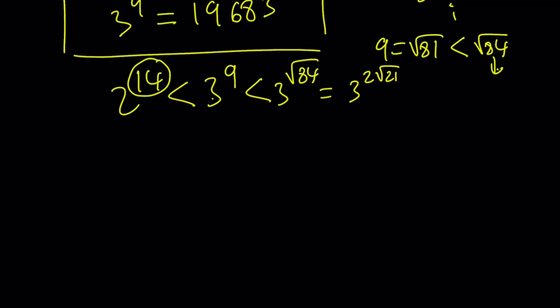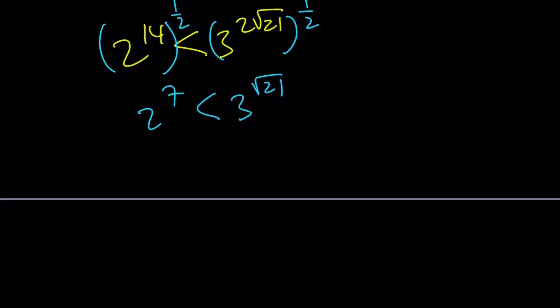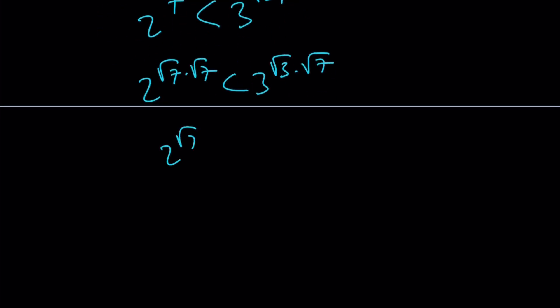So, 3 to the 9th is less than 3 to the power of square root of 84 because 9 is less than square root of 84. And square root of 84 is basically 2 root 21. And square root of 21 contains square root of 7, which we're going to take care of later. And also 14 contains a 7, which is also nice. Hopefully, this will make sense. So, now we've got the following. 2 to the power of 14 is less than 3 to the power of 2 times square root of 21. Let's go ahead and get rid of the 2 in the exponent. Raise both sides to the power of 1 half. That's good because we'll get rid of the 2 and also bring a 7 here instead of the 14. 2 to the 7 must be less than 3 to the power of square root of 21.